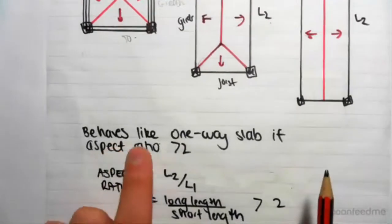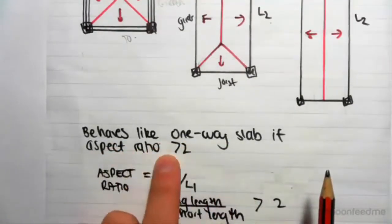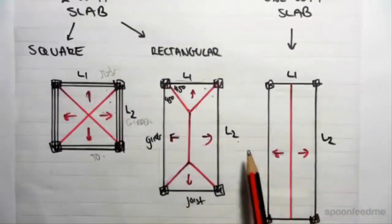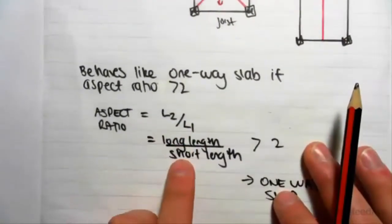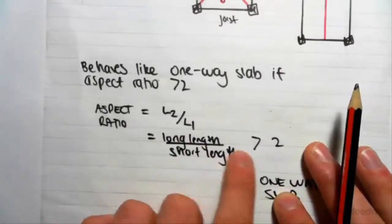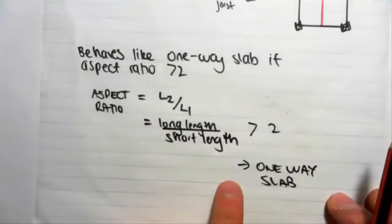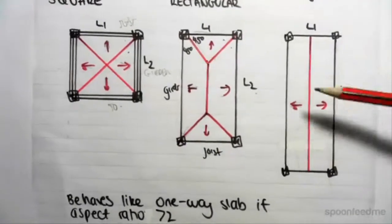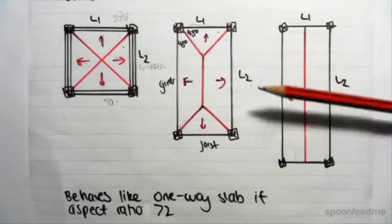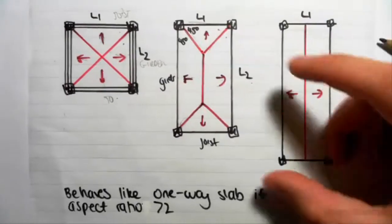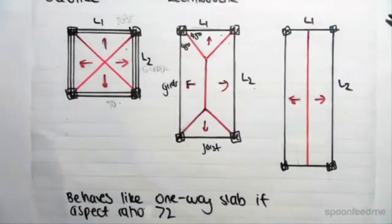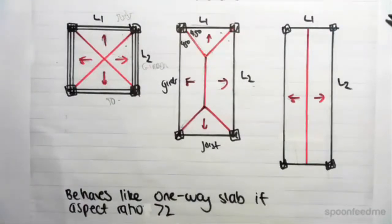It behaves like a one-way slab if the aspect ratio is greater than two. The aspect ratio is L2 divided by L1, where L2 is the long length and L1 is the short length. If that ratio is greater than two, we say it behaves like a one-way slab. Intuitively, if your slab is really long it behaves more like a one-way slab; if it's more square it behaves like a two-way slab.